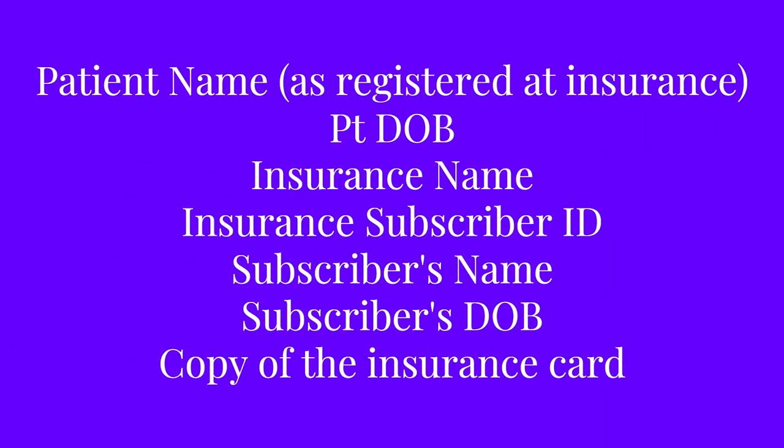The important information that you're always going to need for submitting a prior authorization request: you're going to need the patient's information — their full name and how it appears at the insurance company. If you're sending things in, they might want a copy of the insurance card. You're going to need to know their insurance, their subscriber ID, the subscriber's information if it's a parent or a spouse, and their date of birth. All the patient demographics.